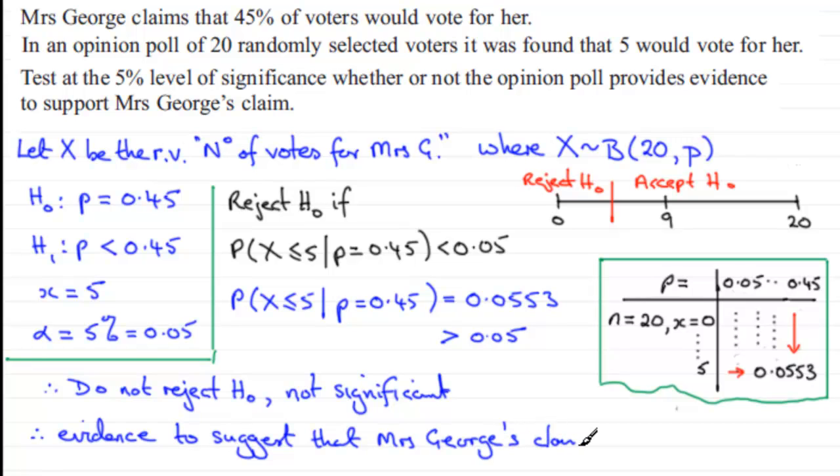There we have one version of working out this particular test. You should be able to see a link here which will give you another way - the critical value method, finding out how 5 compares to a critical value. You can click on this link and it should take you to that video.